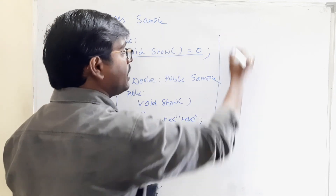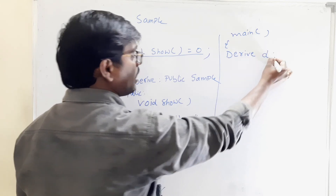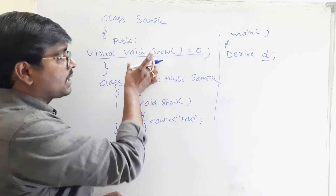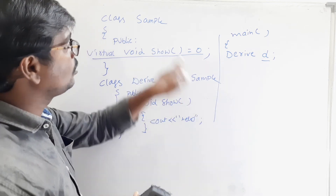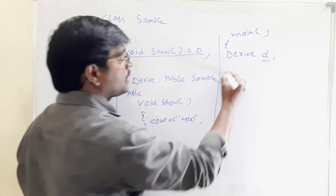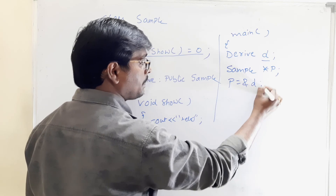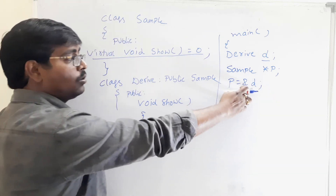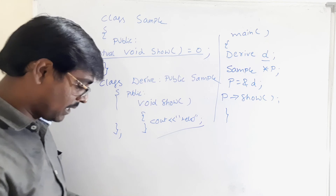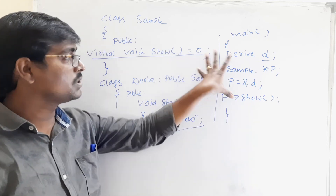Now let's create the main function. We create an object of the derived class: derived d. We cannot create an object for the base class — remember, if a class contains any pure virtual function, it is not possible to create an object for that class. But it is possible to create a pointer or reference. So we create a base class pointer: sample* p = &d. Now if we call p->show(), the answer 'hello' is printed on the screen. This is almost similar to the virtual function concept.